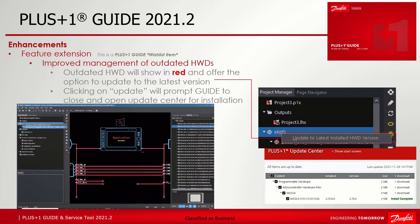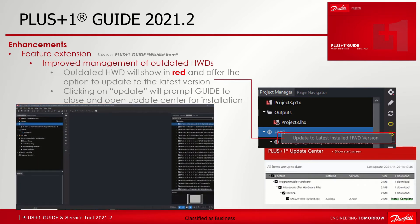Option two: download the latest HWD version via the Update Center. If the latest version has not been installed yet in GUIDE but is available in the Update Center, you can easily choose this option to get the HWD version downloaded and installed automatically. During this process, GUIDE gets closed and needs to be restarted. The Update Center will start automatically and the used HWD will be subscribed to if it was not before. After restart of GUIDE, you can choose the newly installed HWD version.